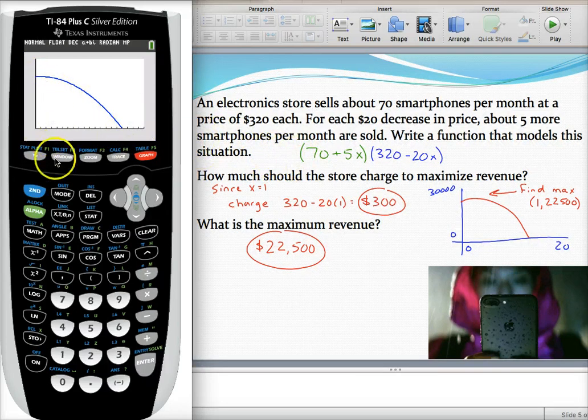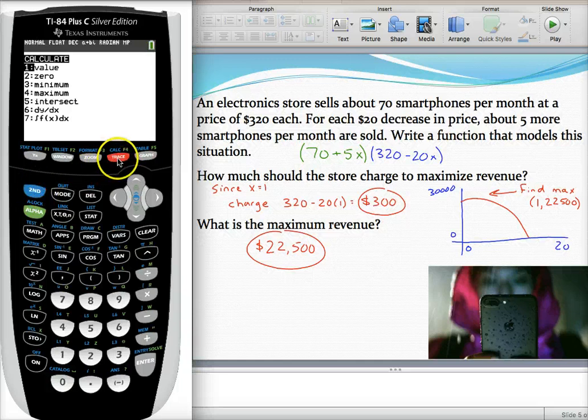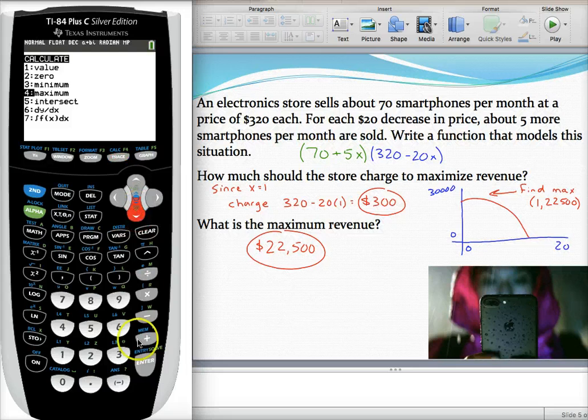So let's find that maximum value. Recall, to do that, we're going to hit second trace to go to the calculate menu. Select max or min, depending on what you're trying to do. We're trying to maximize this time. So select option four.